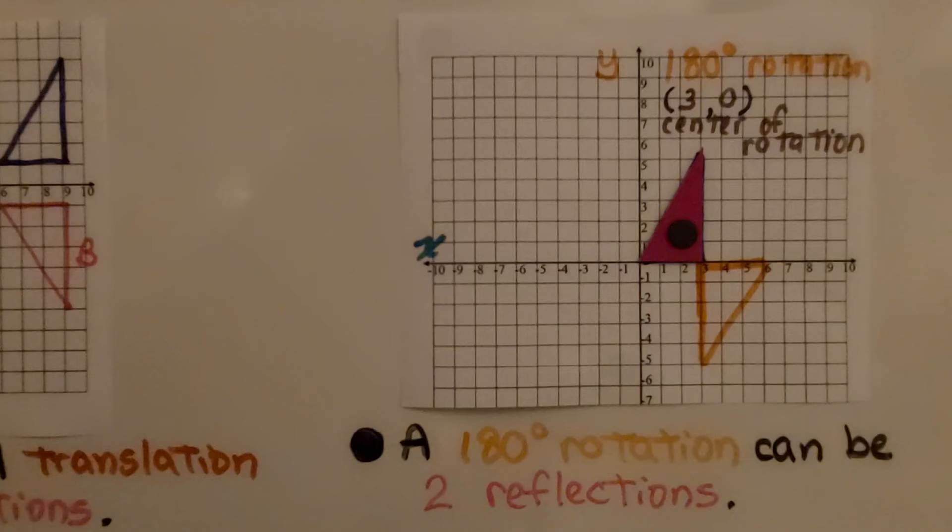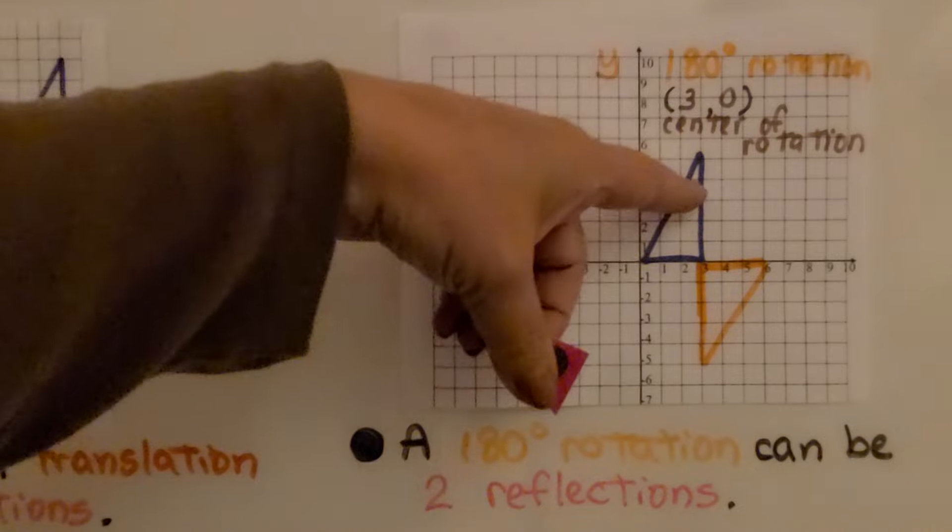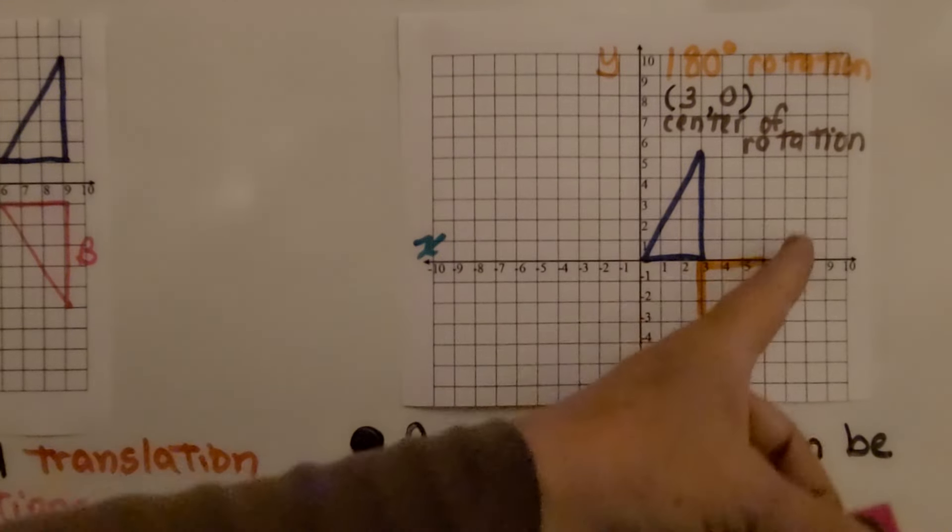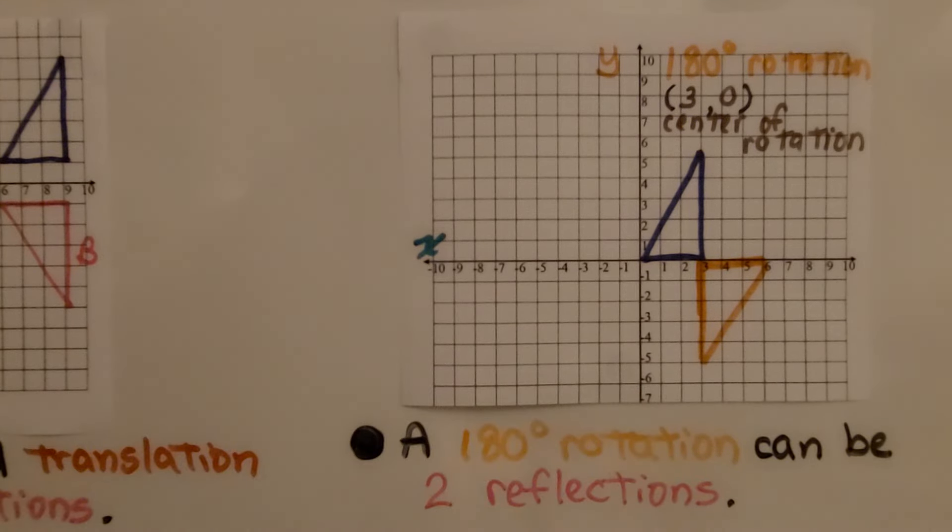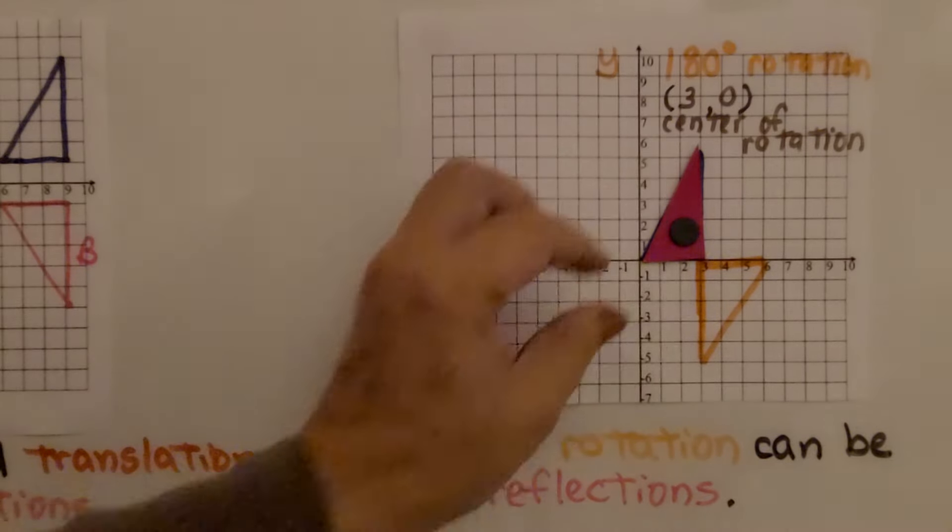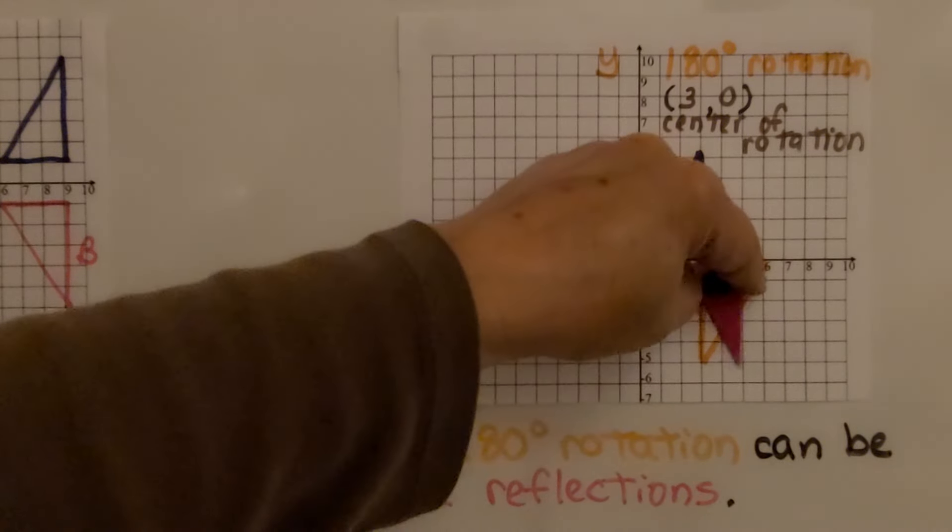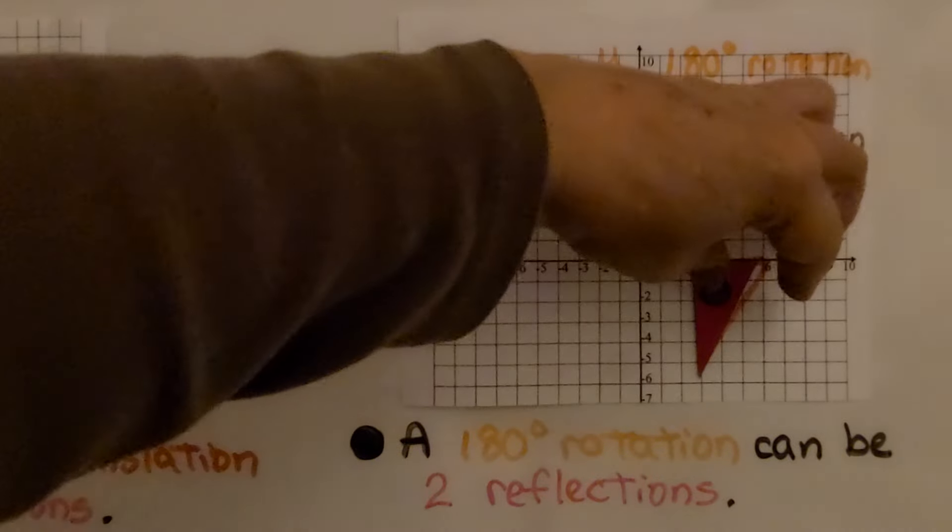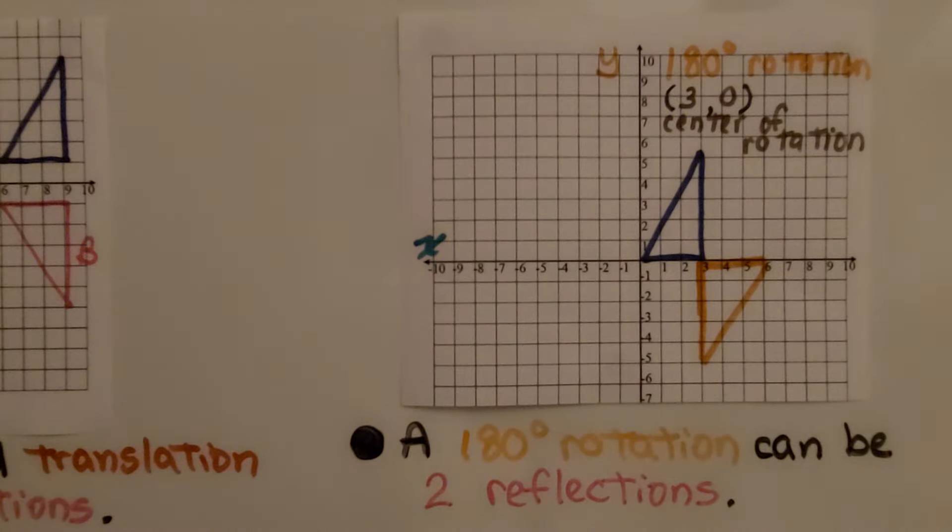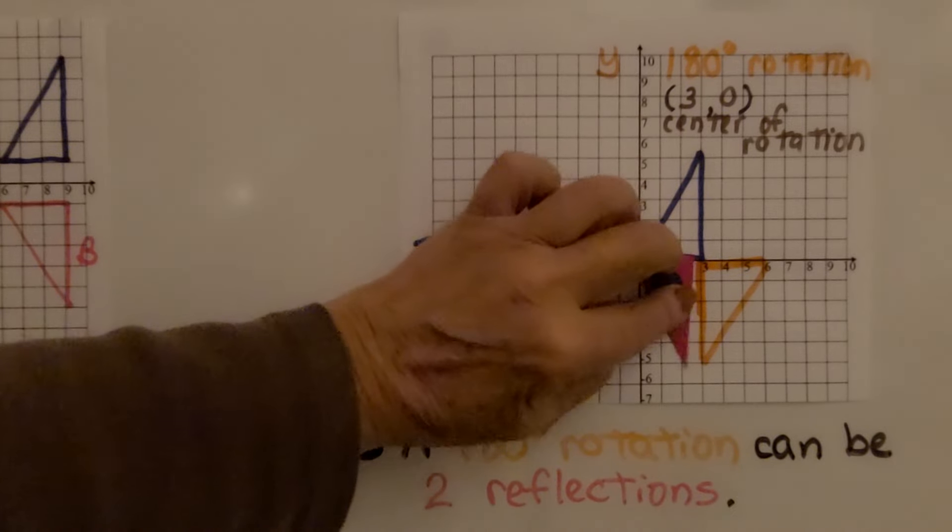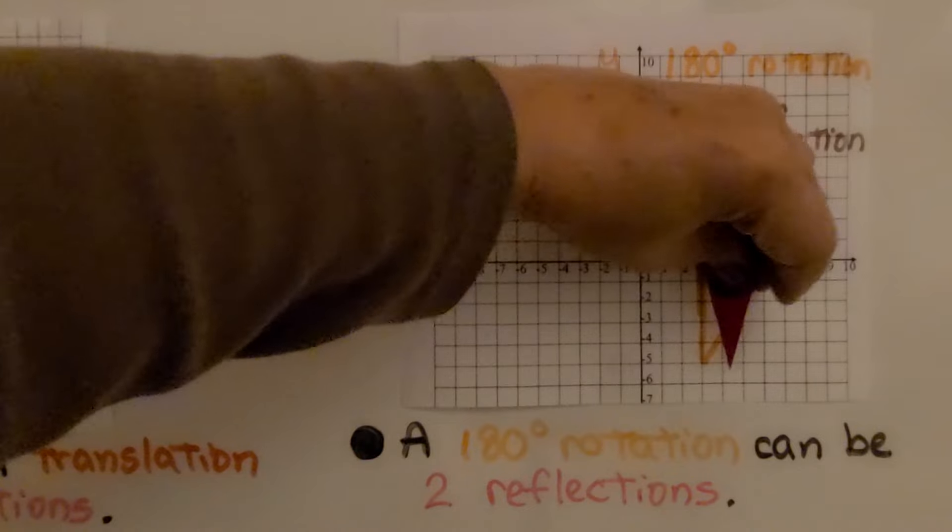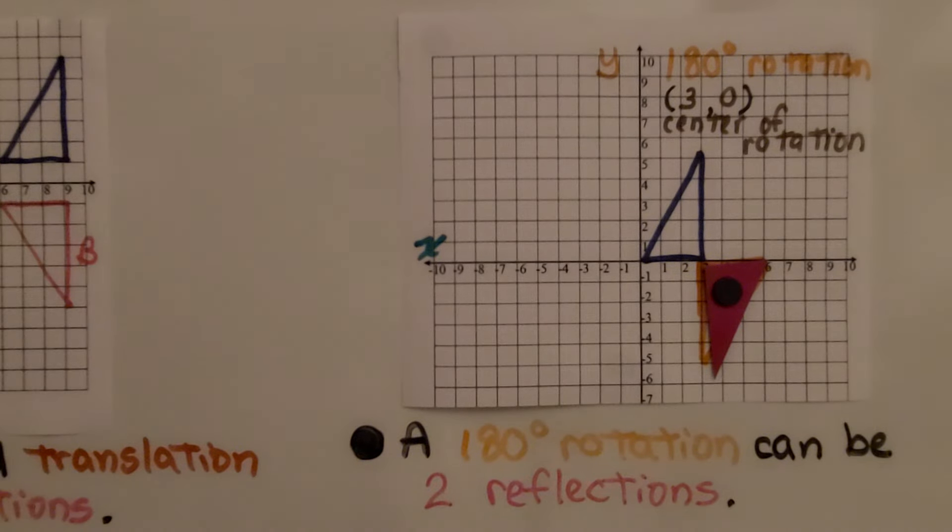Now let's take a look at this one. We have this triangle underneath here and it did a 180 degree rotation with (3, 0) as the center of rotation. So it was right here and we did a 180 degree rotation. So it went like that. Well, we could do this with two reflections instead of a rotation. If we're here, we can reflect it over the x-axis to here. Then we can reflect it again over here. Isn't that something? So we can do translations and rotations as repeated reflections.